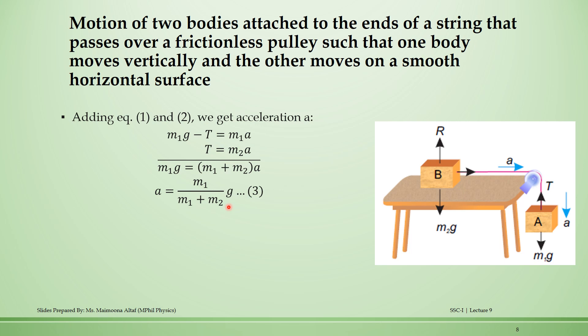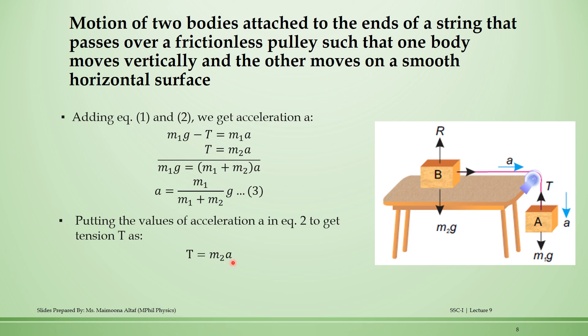To find the tension in the string, we substitute the acceleration value into equation number 2, which was T = M2A. Substituting the expression for A, the tension produced in the string is: T = (M1 × M2) / (M1 + M2) × G. This is the acceleration and tension formula for the case when one body moves vertically and the other moves on a smooth horizontal surface.